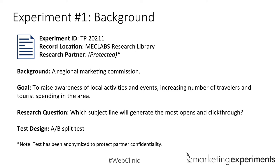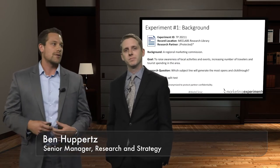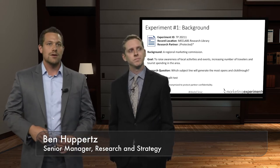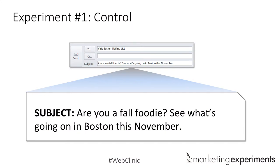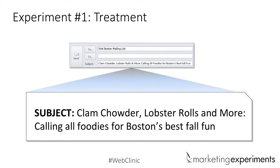Let's dive right into an experiment. Ben, go ahead and walk us through this experiment around subject lines. This experiment was on subject lines for a regional marketing commission — anonymized as Boston in these examples. The goal was to bring in tourists and travelers by raising awareness for local activities and events. The control subject line was: 'Are you a fall foodie? See what's going on in Boston this November.' Our team thought — we're talking to foodies, let's give them food.